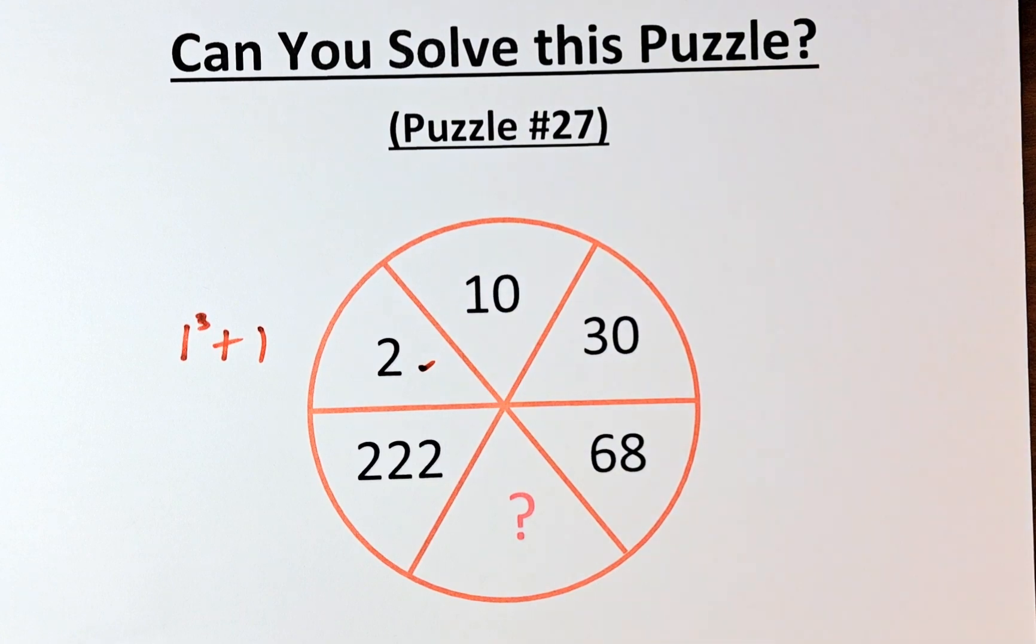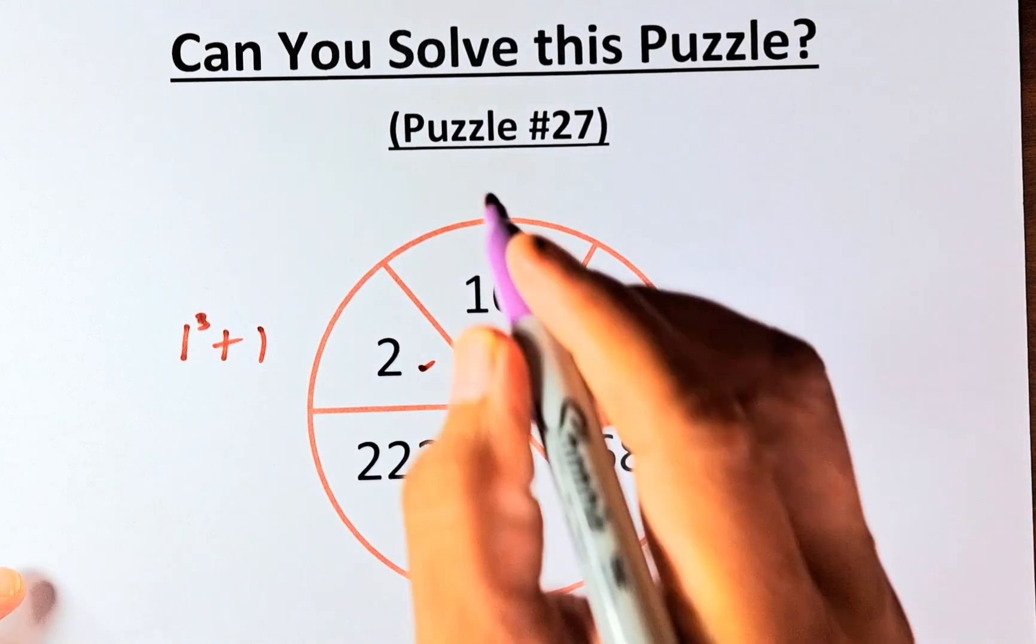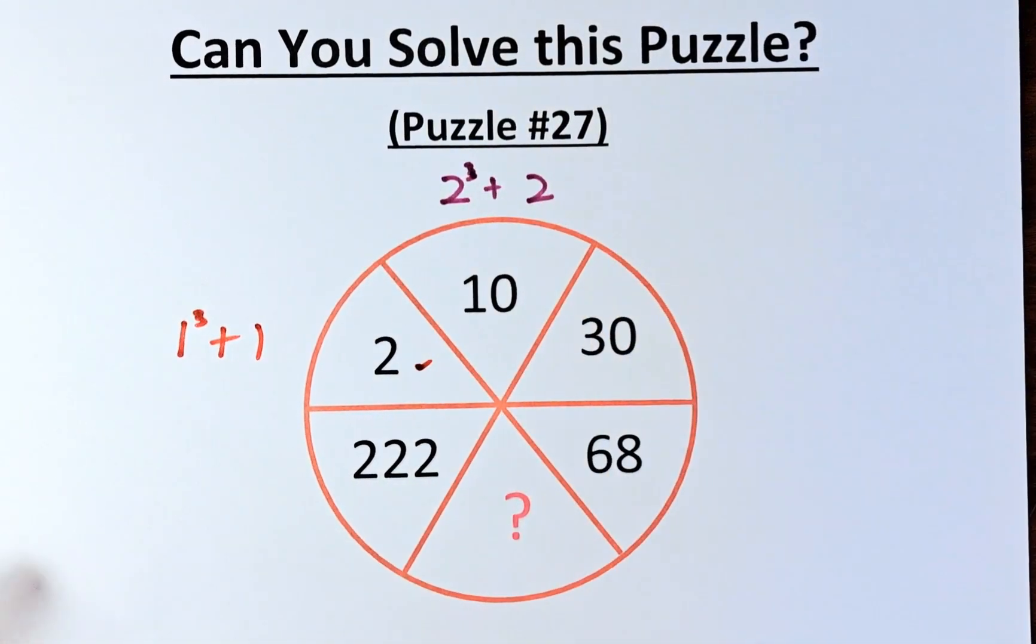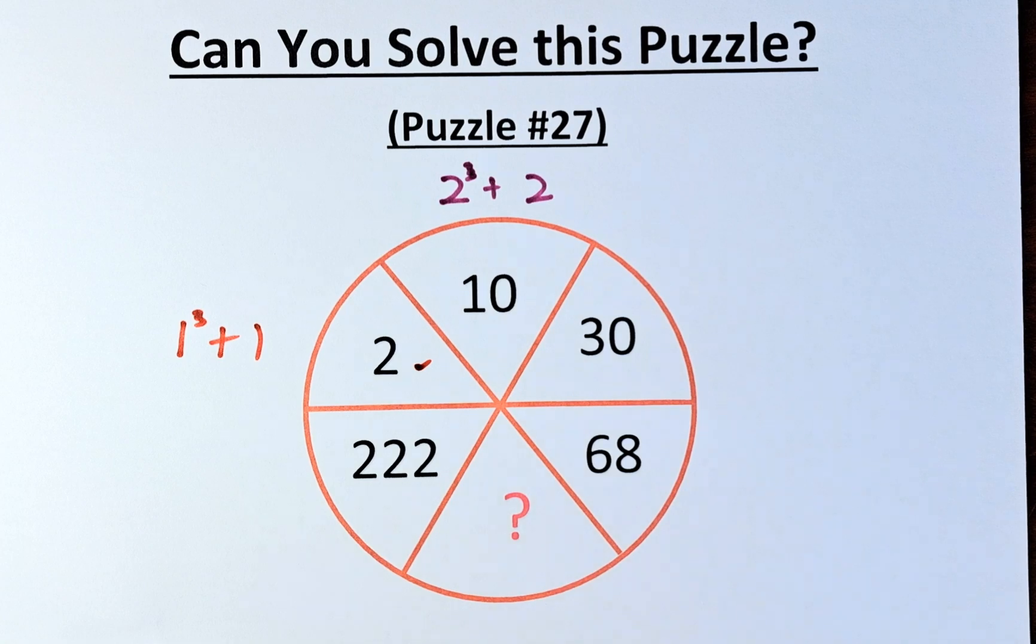The second number is 10. 10 is the same as 2 cube plus 2. So 2 cube is 8. 8 plus 2 will give us 10.